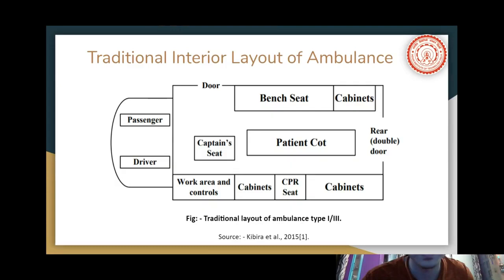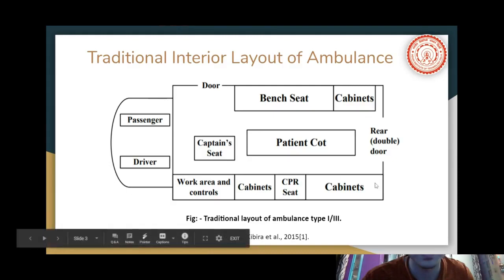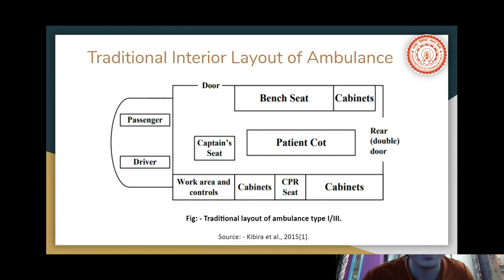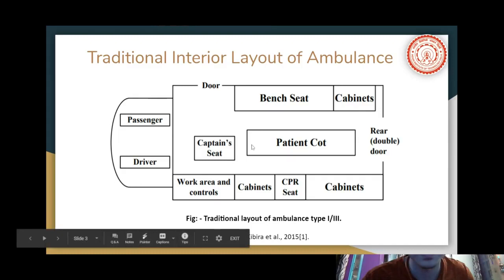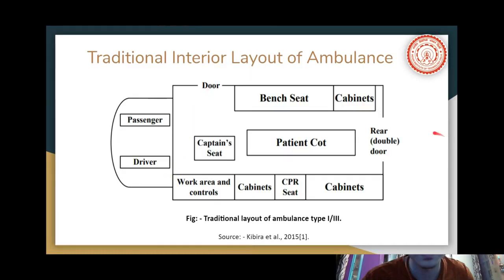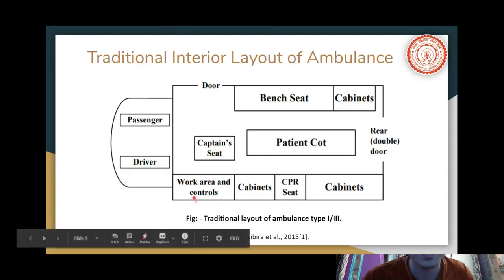There are cabinets — cabinets one, two, and three — which can be used for placing medical equipment. Depending on their size and placement, different equipment can be stored. For example, a larger cabinet with more breadth would probably hold bulkier medical equipment, like a stabilizer. There are two entrances and exits: a rear double door, generally used for patient loading and unloading, and a side door used as a convenient entrance and exit for the person sitting in the captain seat.